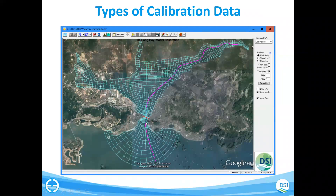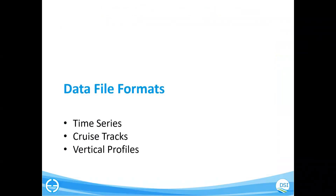For model calibration we will use different types of data. First, we have station data — there is one station called By Chase where we can compare flow rates. We also have a cruise track, where a boat or ship travels along a path recording temperature and salinity. We will have a demonstration of how to compare the cruise data with the model. Next, I will describe three different data formats that we need to prepare for calibration.